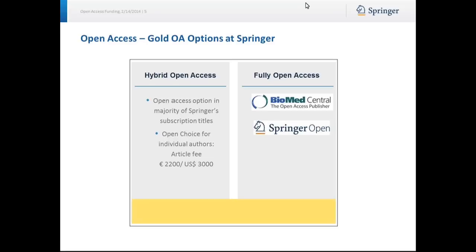These sit on the platforms of BioMed Central and SpringerOpen. BioMed Central publishes peer-reviewed open access journals in the fields of biology, biomedicine, and medicine. SpringerOpen, which launched in 2010, publishes peer-reviewed fully open access journals in all areas of science.